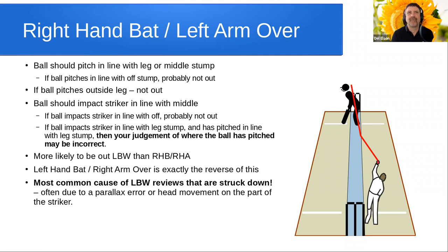Now let's switch to a left-hand/right-hand combination. In this case, we've got a right-hand batter facing a left-arm bowler bowling around the wicket — a fairly common configuration. For you to consider this to be out, the ball should pitch in line with leg or with middle stump. If the ball pitches in line with off stump, it is probably not out — it is missing off. If the ball pitches outside of leg stump, it is definitely not out. The ball needs to impact the striker in line with middle stump. If the ball impacts the striker in line with off, for the reasons I gave earlier, that is also probably not out.